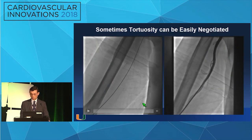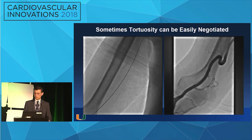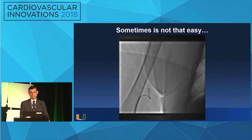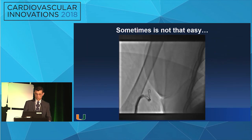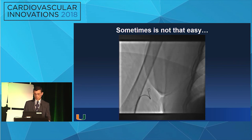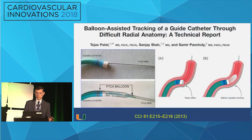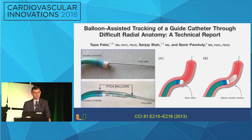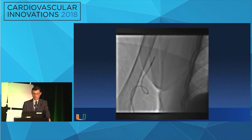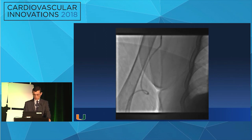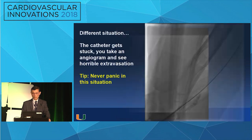At the end, you do a pullback angiogram and everything looks the same as when you started. Sometimes it's not that easy and the wire will not go — if the wire doesn't go, don't push because you're going to break or disrupt something. So take an angiogram, because there are solutions. The solution is BAT — balloon-assisted tracking. This is a technique published by Dr. Pancholi, which smooths the transition between the wire and the catheter. When you get to that point with a loop, all you want to do is torque one way or the other, and that will straighten the vessel so you can continue.